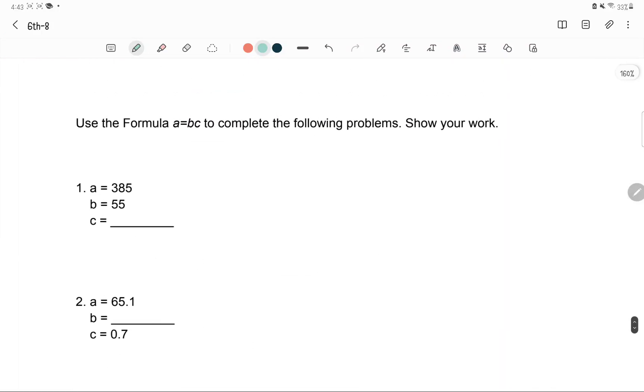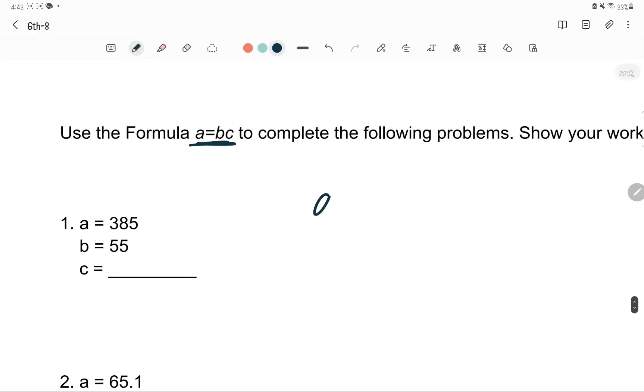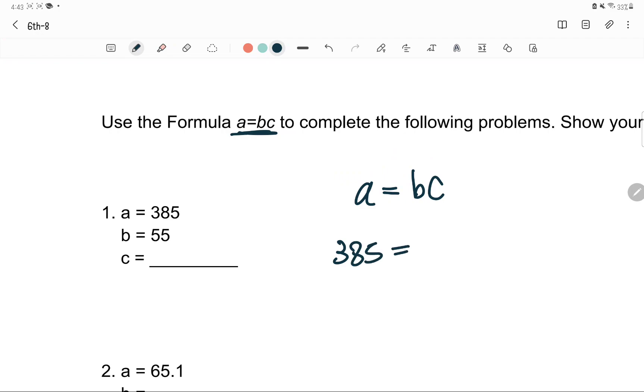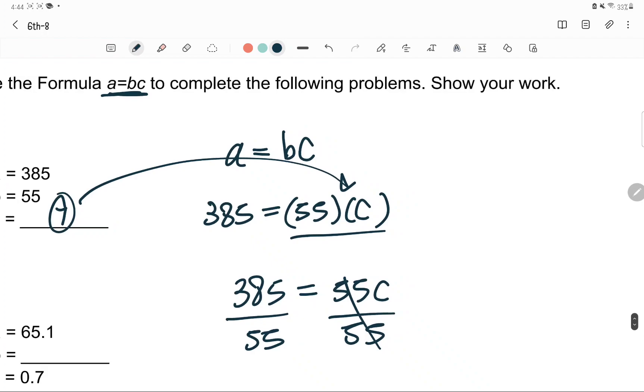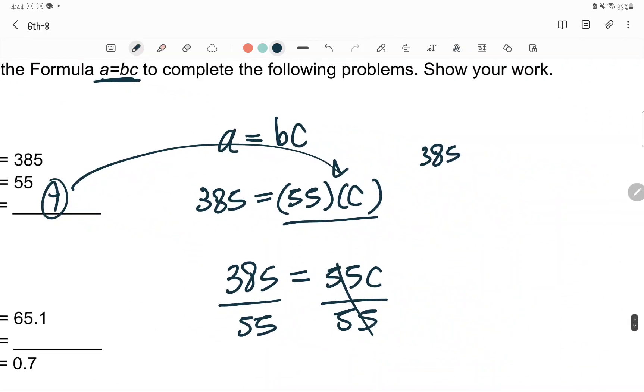Let's quickly go over substituting the numbers in. The equation is given, which is A equals B times C. 385 is equal to 55 times C, which we don't know. This is the same format that we did. 55 divided by 55 to get rid of 55. 385 divided by 55. The answer is 385 divided by 55 is 7. So C is 7. You can check by just plugging in 7 into the C. 385 is equal to 55 times 7, which will get 385.